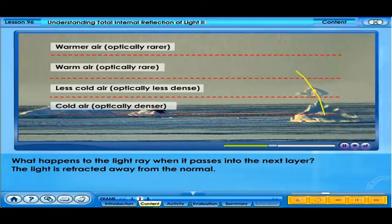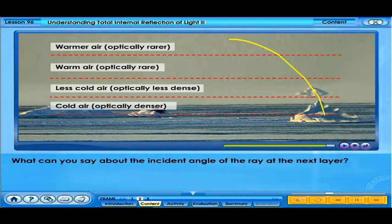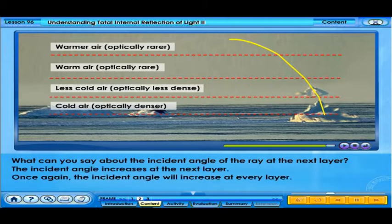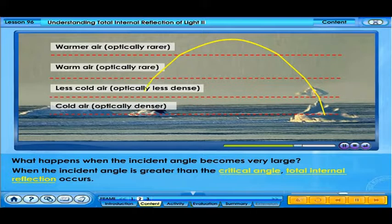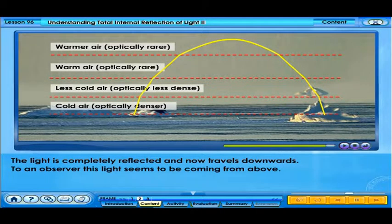The light is refracted away from the normal. What can you say about the incident angle of the ray at the next layer? The incident angle increases at the next layer. Once again, the incident angle will increase at every layer. What happens when the incident angle becomes very large?